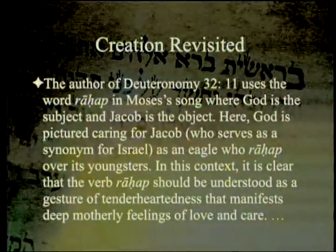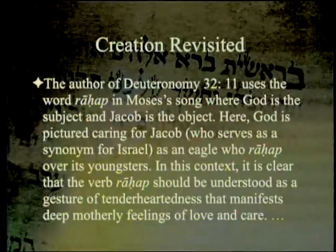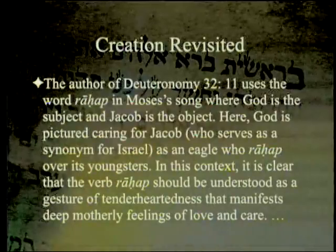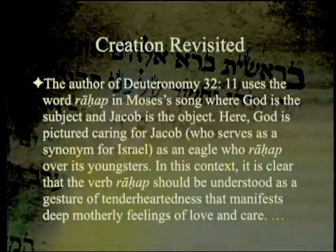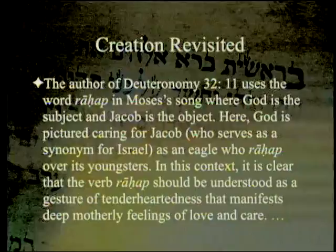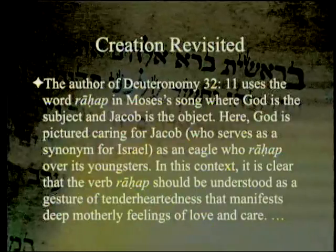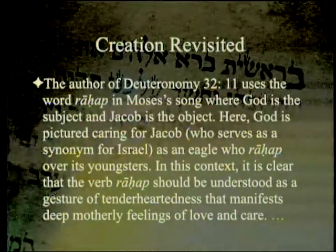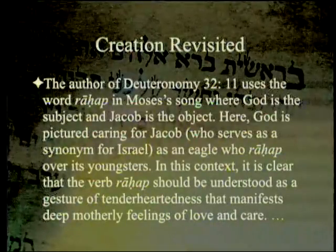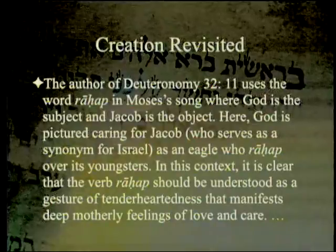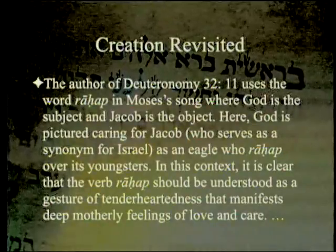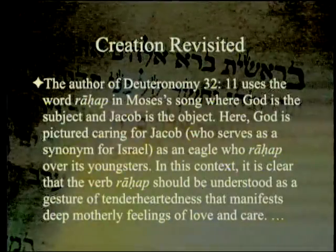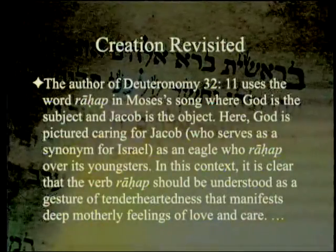The author of Deuteronomy 32:11 uses 'rahap' in Moses' song, where God is the subject and Jacob is the object. God is pictured caring for Jacob — a synonym for Israel — as an eagle who 'rahap,' flutters and hovers over its youngsters. In this context, the verb 'rahap' should be understood as a gesture of tenderheartedness that manifests deep motherly feelings of love and care.